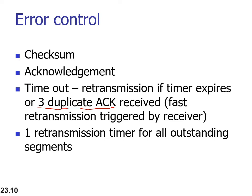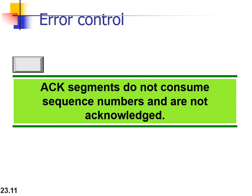When retransmitting after the new window size is advertised, say five segments are sent at a time, they share a common retransmission timer for efficiency. Acknowledgement segments do not consume sequence numbers and are not themselves acknowledged. The segment is identified by its sequence number; there is no sequence number for acknowledgement-only segments.